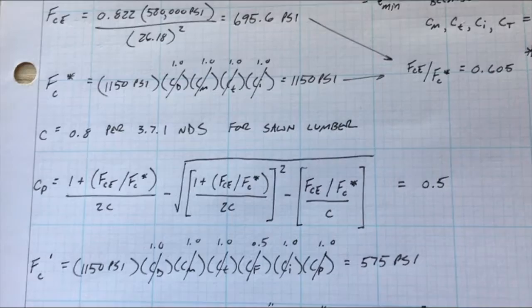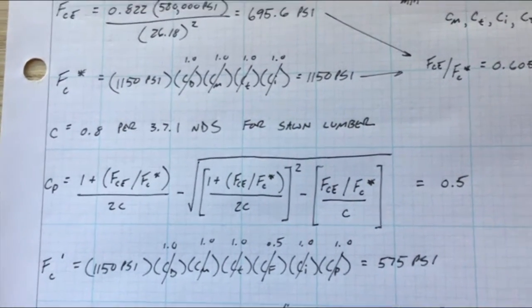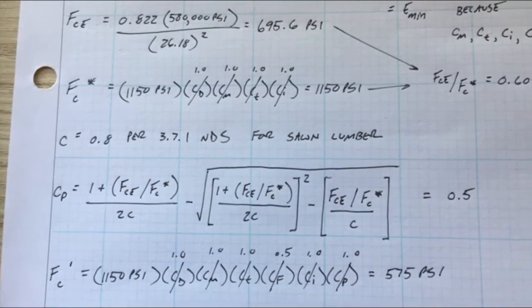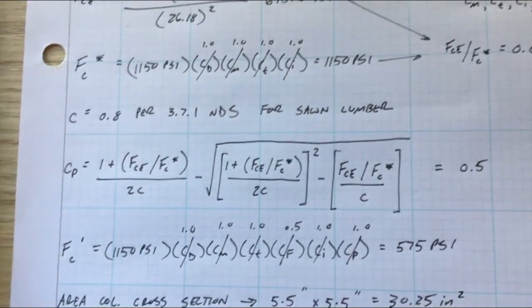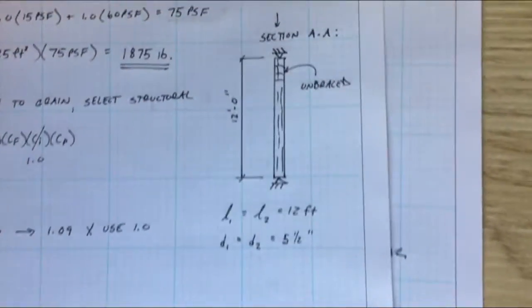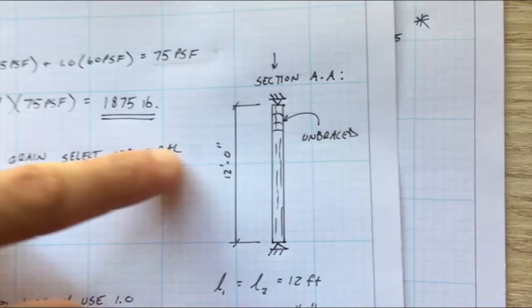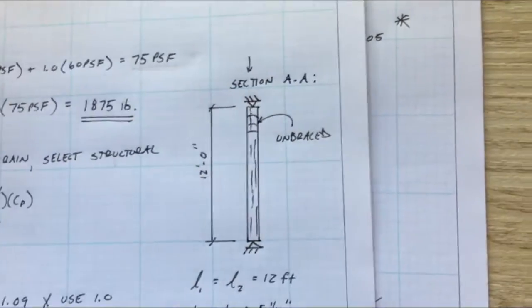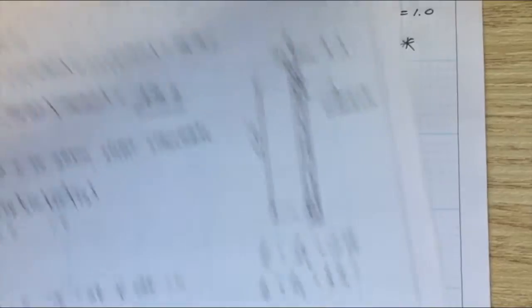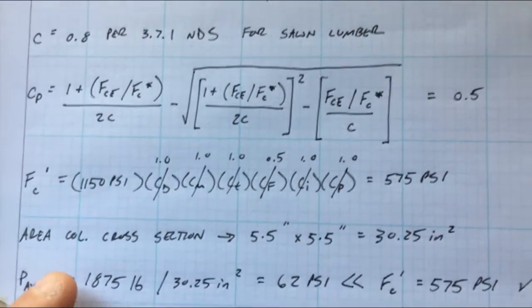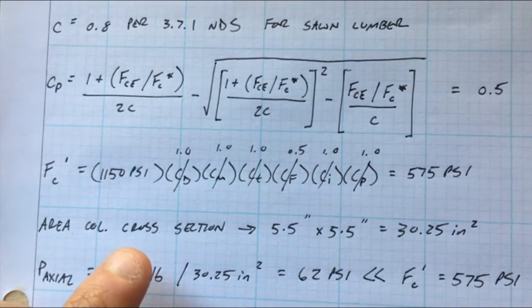And that's because it makes sense because we have a 12 foot column that's unbraced laterally all the way from top to bottom. So that's what I was talking about before, just totally unbraced all the way up. So if we braced it at some points moving down that would significantly jump up the capacity that we're allowed to use for that column.